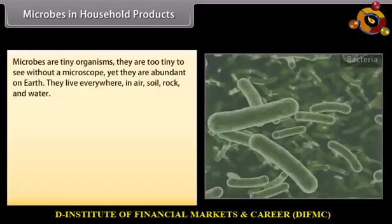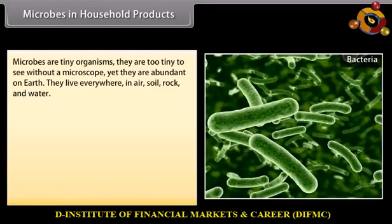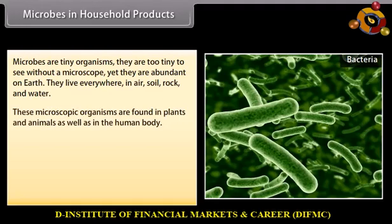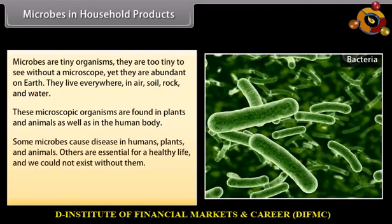Microbes in household products. Microbes are tiny organisms — they are too tiny to see without a microscope, yet they are abundant on earth. They live everywhere: in air, soil, rock, and water. These microscopic organisms are found in plants and animals, as well as in the human body.